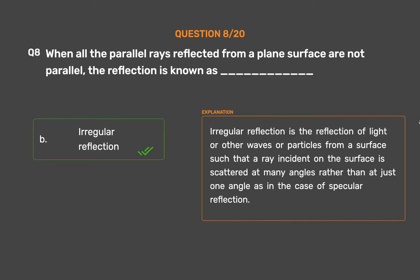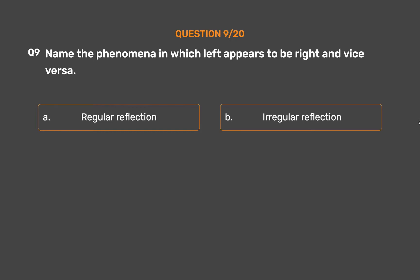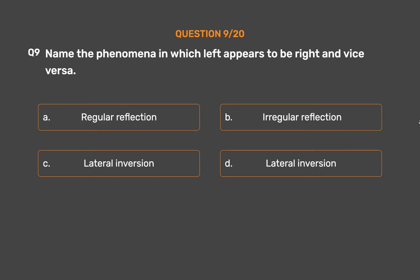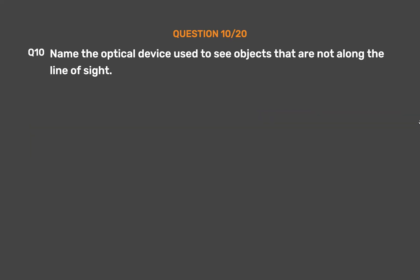Question number 9: Name the phenomenon in which left appears to be right and vice versa. Option A: Regular reflection. Option B: Irregular reflection. Option C: Lateral inversion. Option D: None of these. The correct answer is Option C, Lateral inversion. Lateral inversion means the apparent reversal of the mirror image — the image's left and right are swapped compared with the object. In a plane mirror, each point on the image is as far behind the mirror plane as the corresponding point on the object is in front.